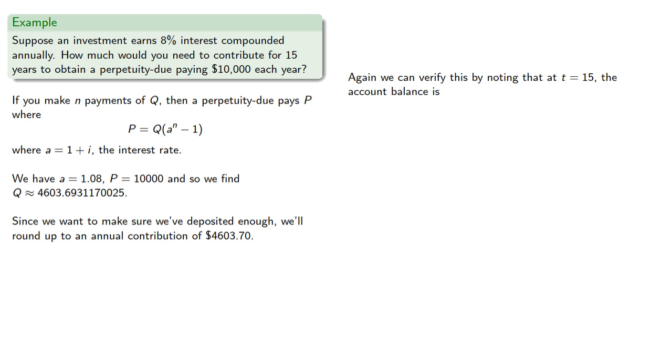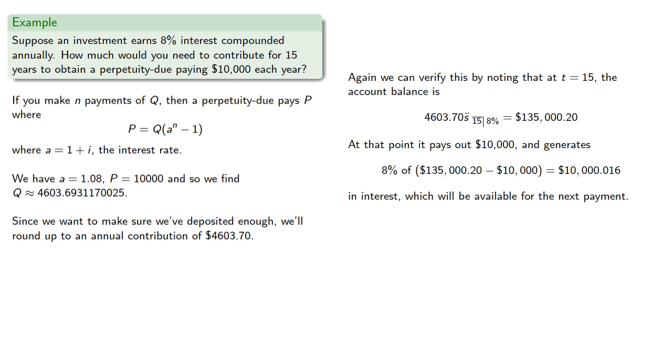Again we can verify this by noting that at t equal to 15 the account balance will be calculable. At that point it pays out 10,000 and over the next year will generate a little bit over 10,000 in interest, which will be available for the next payment.